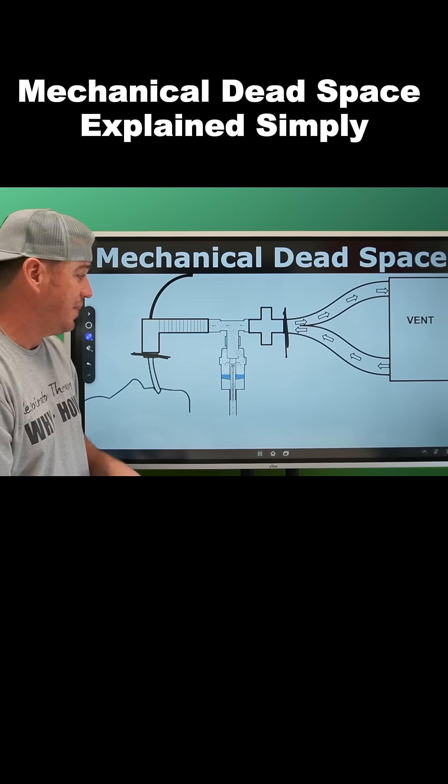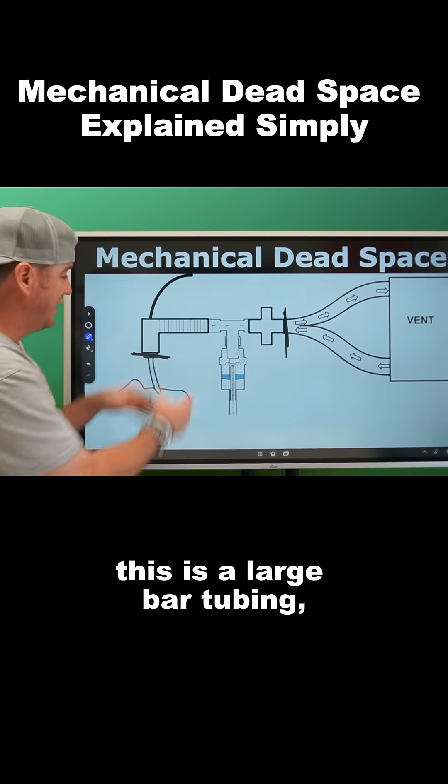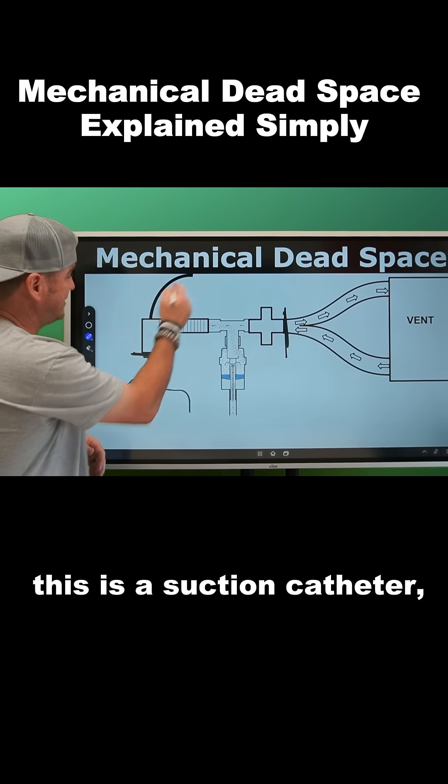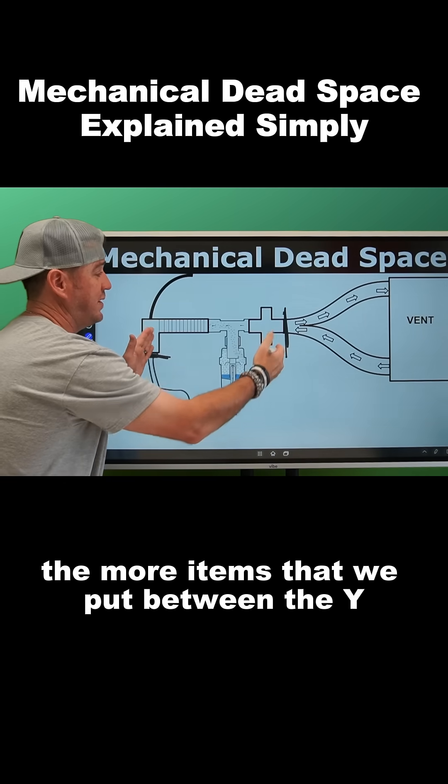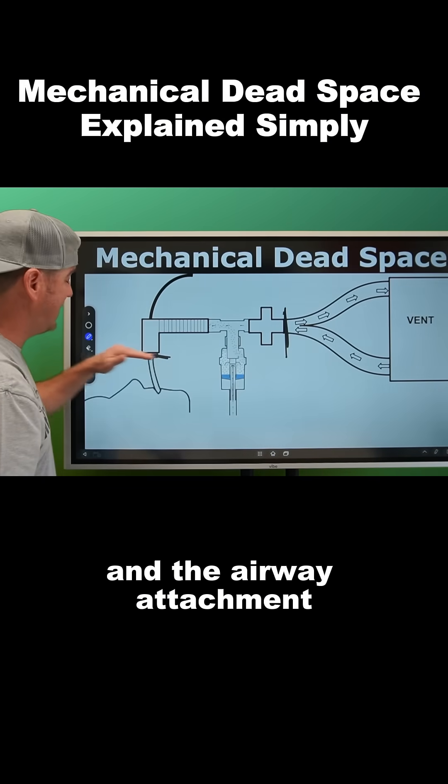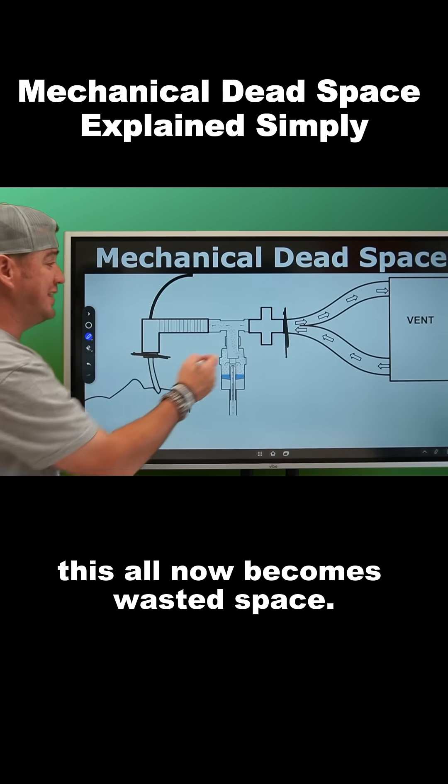This resembles an HME, this is obviously a nebulizer, this is large bore tubing, this is a suction catheter. What we see is that the more items we put between the Y and the airway attachment, this all becomes wasted space.